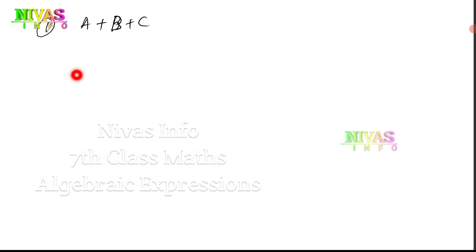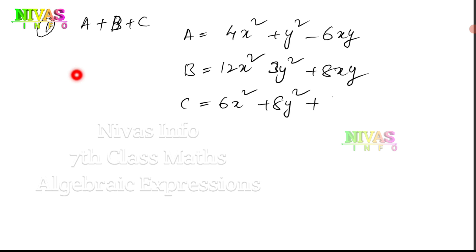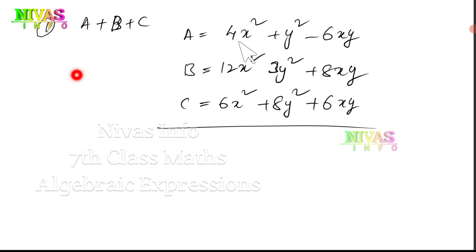First sub-problem: A plus B plus C. We need to add A, B, and C. A is equal to 4x² plus y² minus 6xy. We need to add B value: B is 12x², next y is 3y², next 8xy. C is equal to 6x² plus 8y² plus 6xy. It is addition, so no sign change.